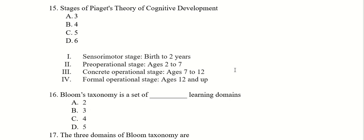Stages of Piaget's theory of cognitive development. The right answer is 4. The first stage is sensory motor stage, birth to 2 years. Then pre-operational stage is 2 to 7 years. Concrete operational stage is 7 to 12 years. Formal operational stage is 12 and above.